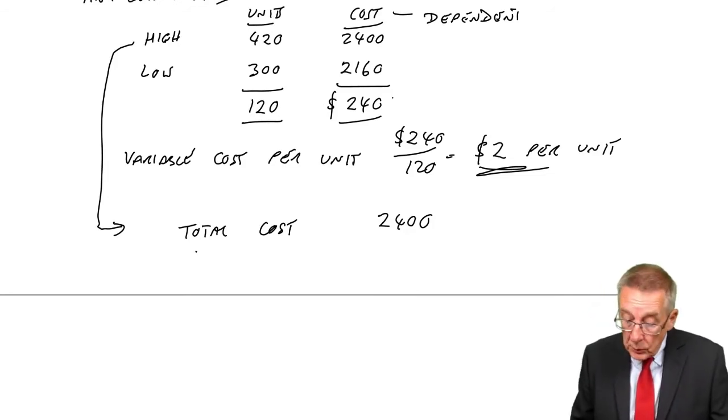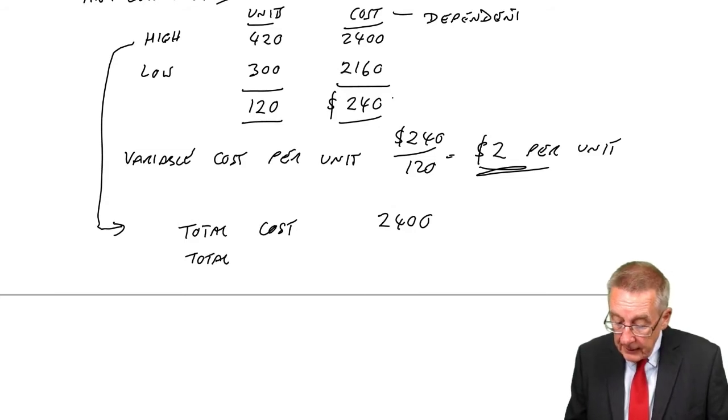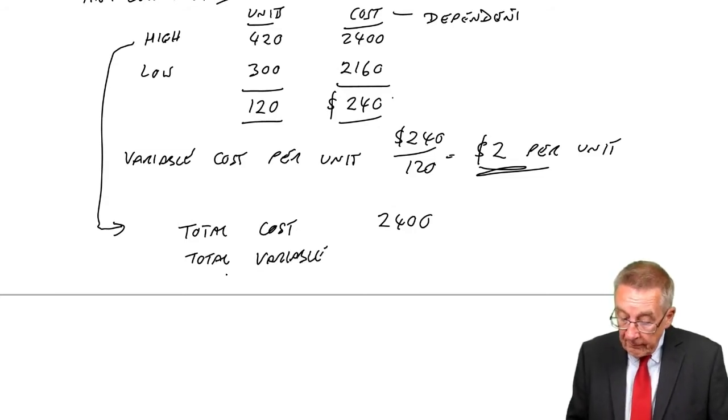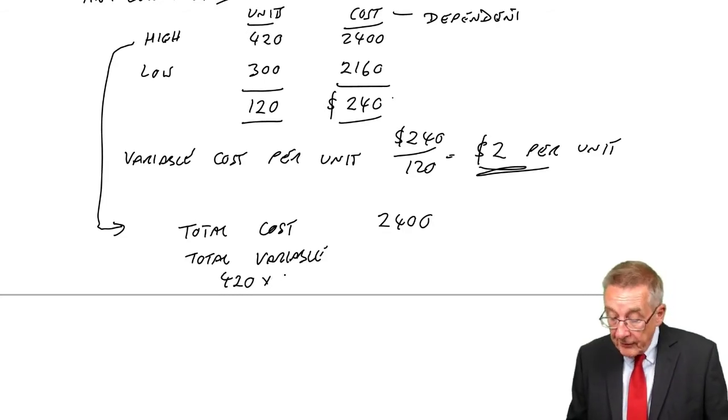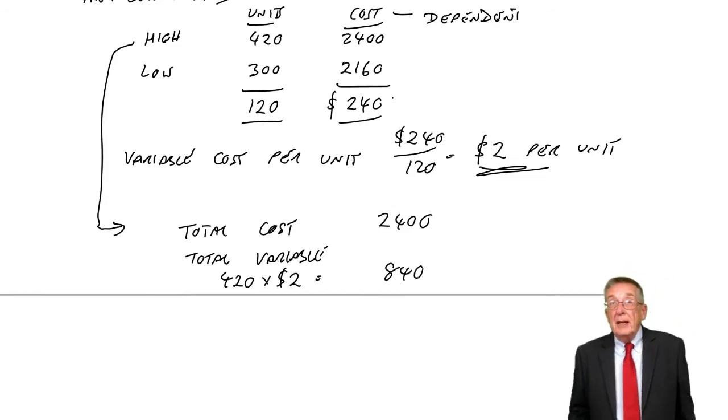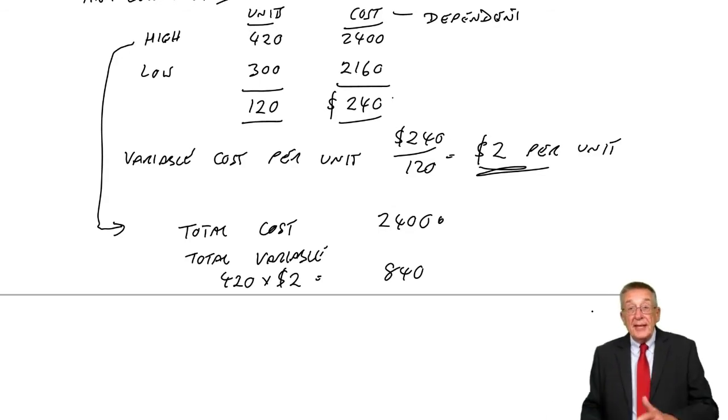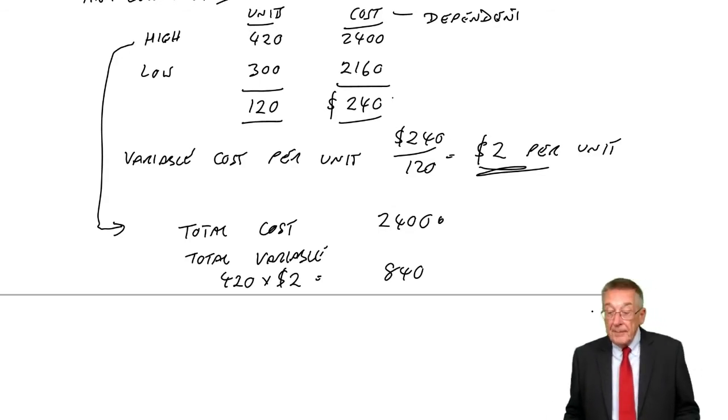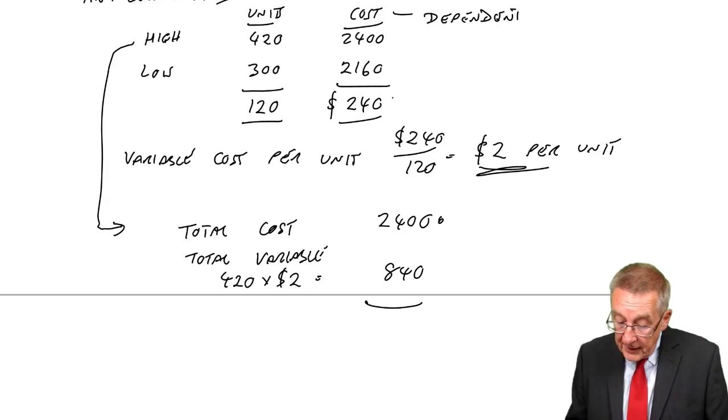We now know what the total variable cost is. The high one, there are 420 units, and we've calculated it's two dollars a unit. A total of 840. And since the 2,400 is the total of the fixed plus the variable, the fixed must be the difference.